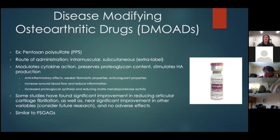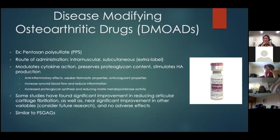Cartrophen is thought to work through anti-inflammatory effects and has some fibrinolytic properties, helping break down structures that might damage the joint or soft tissues. It also has anticoagulant properties, which may increase synovial blood flow to the joint, reducing inflammation. Because of this slight anticoagulant effect, if a horse has anemia or blood issues, we may want a basic blood sample before using these therapies.